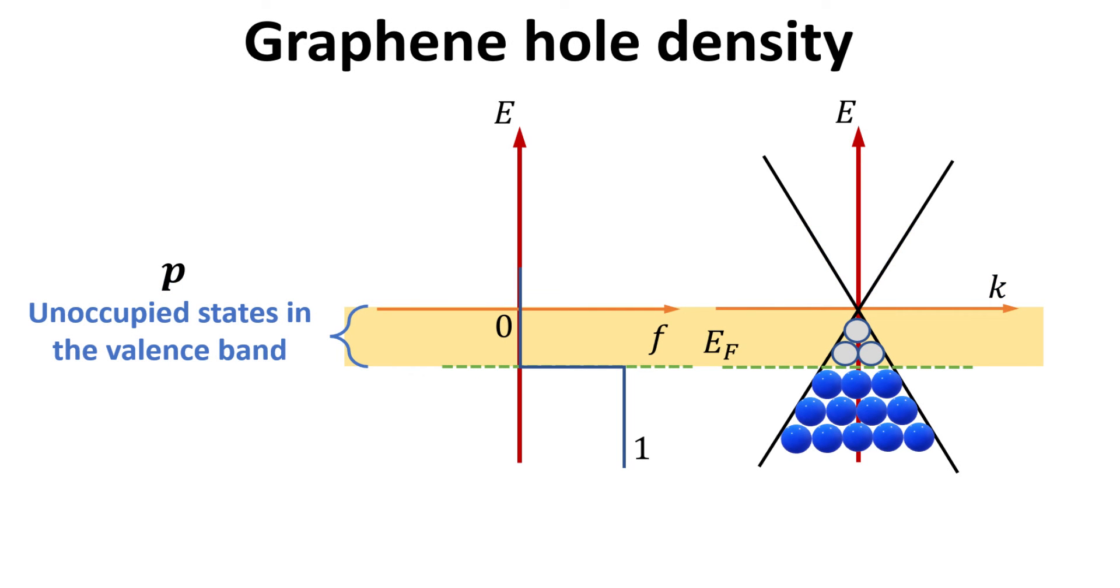The depleted electrons would lead to net positive charge. We call an unoccupied electronic state in the valence band a hole, and it has the same charge as an electron, but positive.